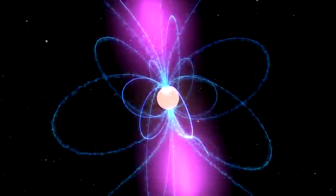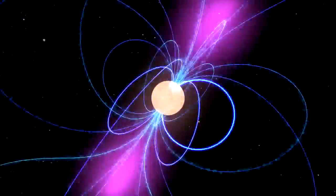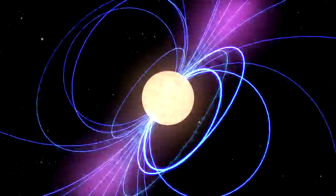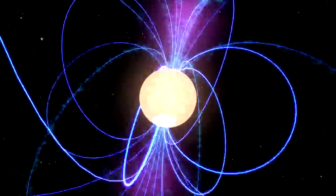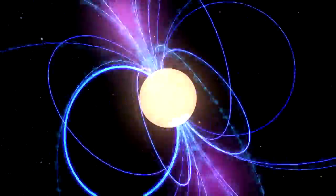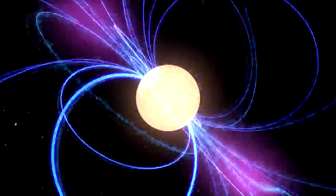Neutron stars spin between 7 and 40,000 times a minute and form with incredibly strong magnetic fields. Rapid spin and intense magnetic fields drive powerful beams of electromagnetic radiation, including gamma rays.